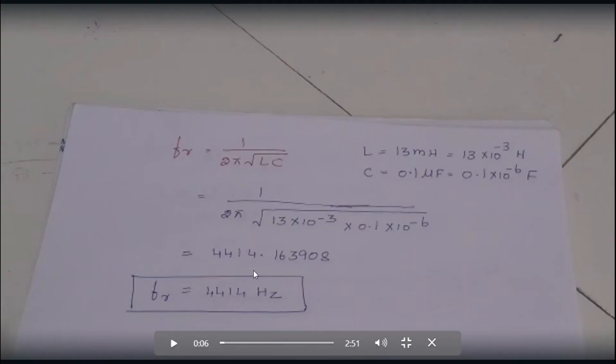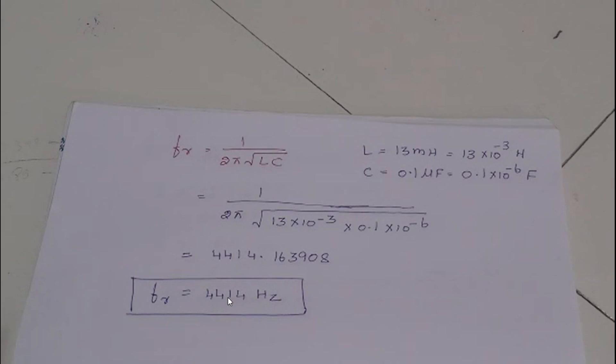Finally, we have written this result. Fr is equal to 4,414 hertz. That is all about the calculation for the LCR series circuit. I hope you understand how to do this calculation in the scientific calculator by using the powers and root.